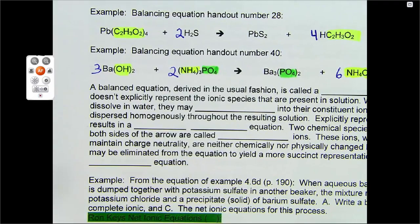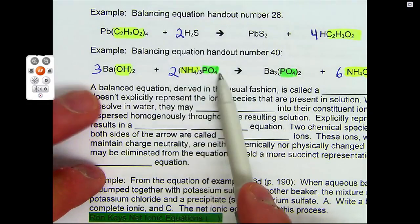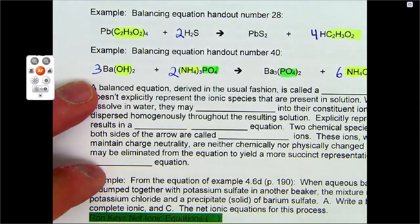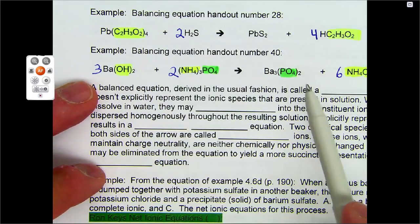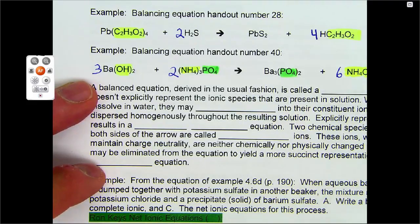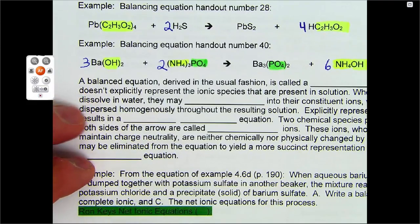And if you really want to know if you have it balanced, double check your number of oxygen. We have two times four. We have eight oxygen here. Three times two here, six. We got 14 oxygen on both sides, which matches four times two here, eight, and six times one. So, this is all balanced.